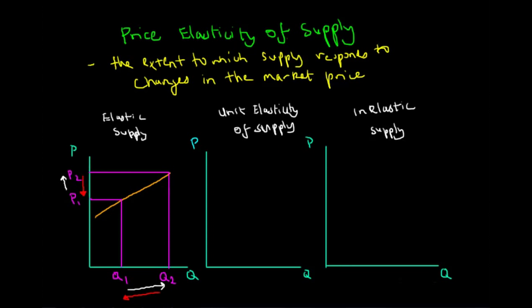Now let's move on to the second part of the price elasticity of supply, which is unit elasticity. That means the change in price is proportional to the change in quantity, so the gradient of the graph is 1 — that is, m equals 1 in this case.